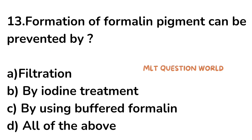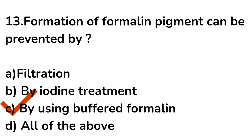Question number 13. Formation of formalin pigment can be prevented by: option A. Filtration, option B. By iodine treatment, option C. By using buffered formalin, option D. All of the above. The right answer is option C, by using buffered formalin. Formation of formalin pigment can be prevented by using buffered formalin.